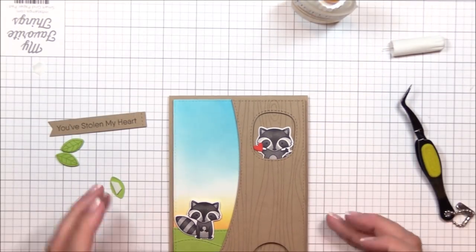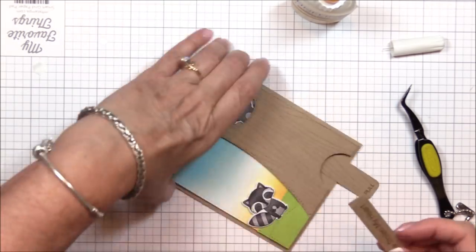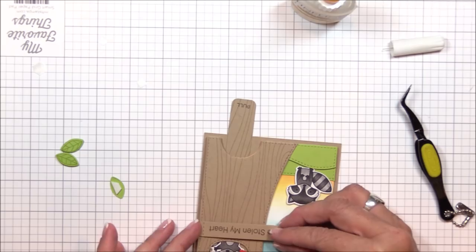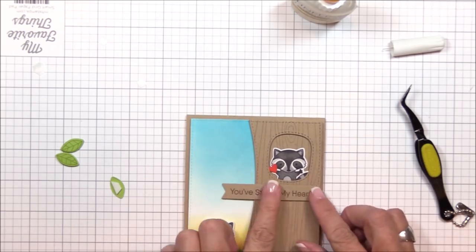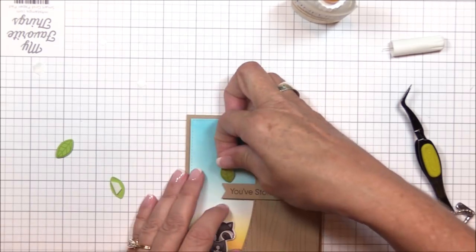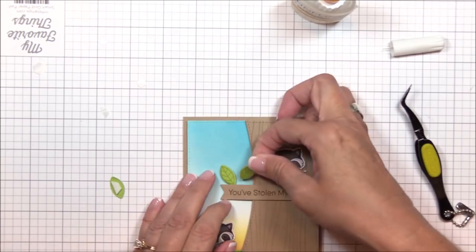I stamped and die cut one of the sentiments from the friendly raccoon stamp set, and I'm adhering it just below the tree trunk window with some thin 3D foam squares. I thought it'd be fun to make the sentiment strip look like a tree branch, so I stamped and die cut one of the leaves from the same stamp set, and I'm adhering them to the image panel with more foam squares.